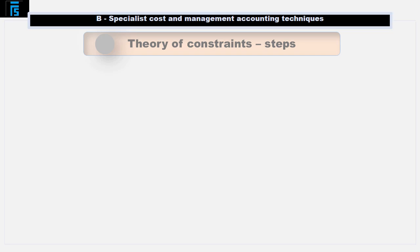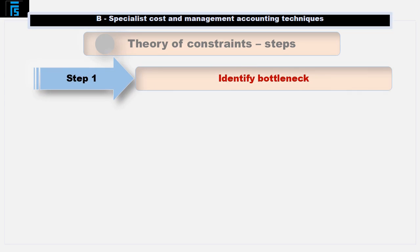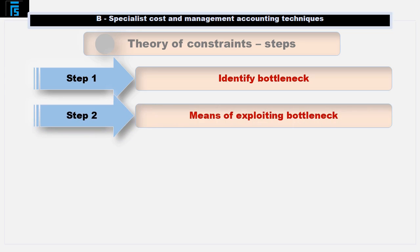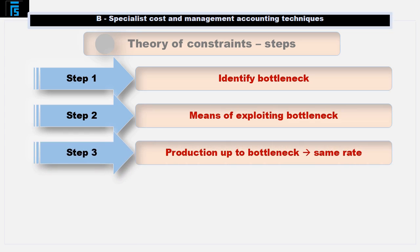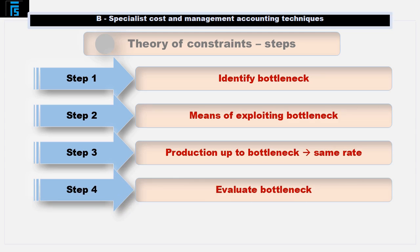There are five main steps in the theory of constraints process. Step 1 is to identify the bottleneck or constraint. Step 2 is to decide the best means of exploiting the bottleneck — in other words, make sure that output is maximised at the bottleneck. Step 3 is to ensure that production up to the bottleneck is at the same rate as after the bottleneck, so that work in progress does not build up. Step 4 is to work out ways to elevate the bottleneck, meaning ways of increasing the output at the bottleneck point so that total output can increase.